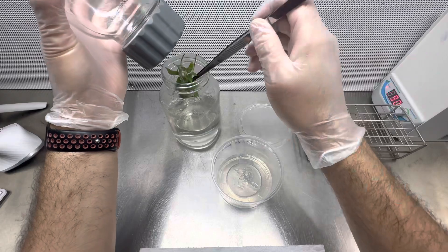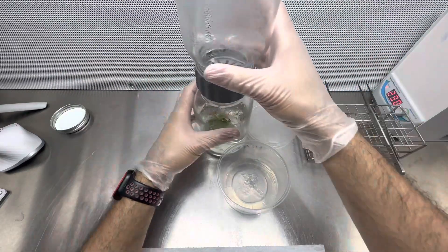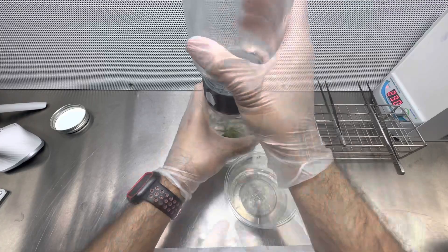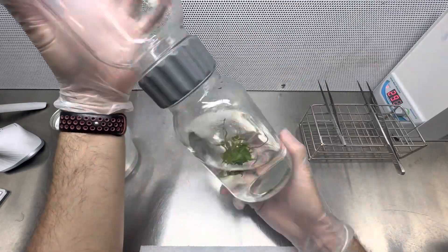All I have to do next is place my label and write the date. I write the date with a sharpie because in the future I may change the media but I'm going to keep the plants in the same jar.